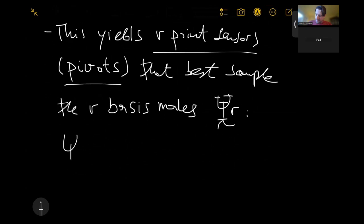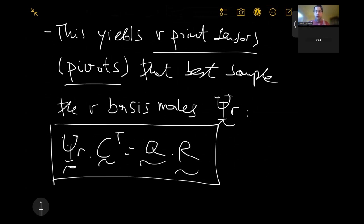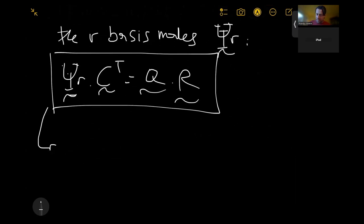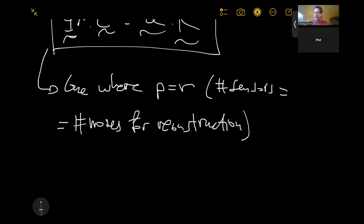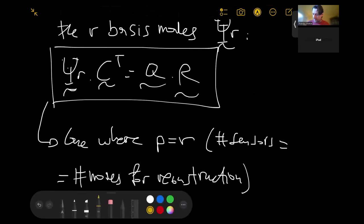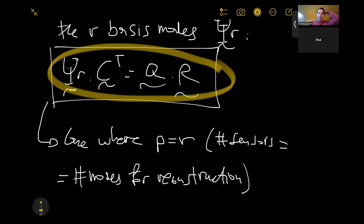Basically, Psi R times C transpose equals some Q matrix and some R matrix. I want to apply this decomposition with this transformation Psi R. If we consider the case where P equals R (the number of sensors equals the number of modes for reconstruction), then we can directly apply this expression and we are pretty much done. This would be the operation that I need to do to obtain my pivots, which will be present in this matrix.